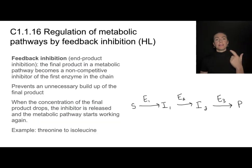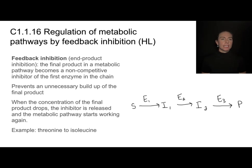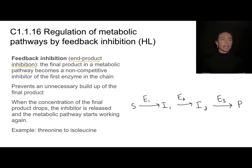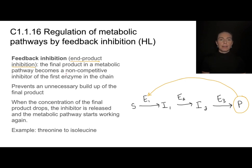The final type of inhibition is called feedback inhibition, also referred to as end-product inhibition. In an enzyme chain, an initial substrate is converted into a final product using a series of enzymes. When the concentration of the final product is high enough, we don't want to keep producing it. So in feedback inhibition, the end product becomes a non-competitive inhibitor of the very first enzyme in the chain — it binds to the allosteric site and shuts down the process.